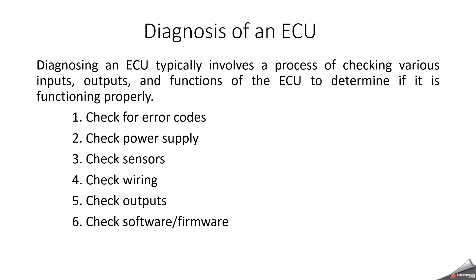How can we diagnose an ECU? Whenever there is a fault inside the vehicle, a service technician follows these steps. First, check for error codes — these are called DTCs (Diagnostic Trouble Codes), stored in memory; a diagnostic tool reads these codes to help diagnose the issue. Second, check power supply, such as KL15 or KL30 engine status and battery power supply. Third, check sensors and wiring — whether wiring is proper, sensors are connected, and correct power supply is provided to sensors. Fourth, check outputs, meaning actuators. Fifth, check software or firmware, as there may be a problem with the flashed software that must also be verified. These are all the ways a technician can properly identify problems inside the ECU.